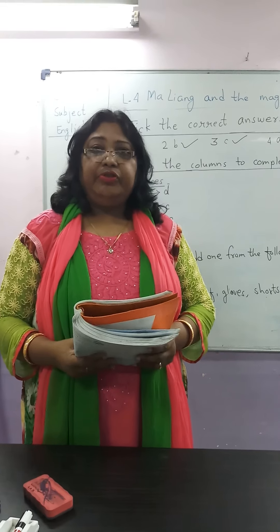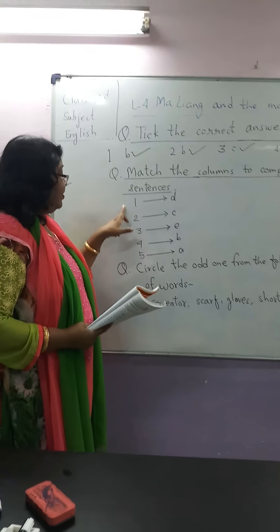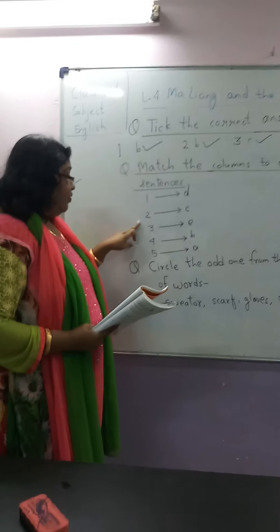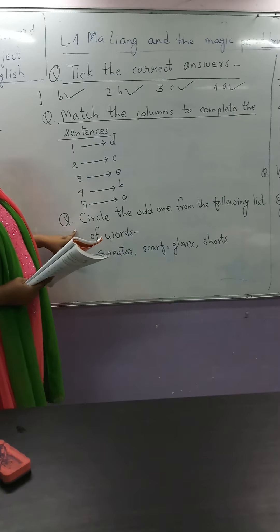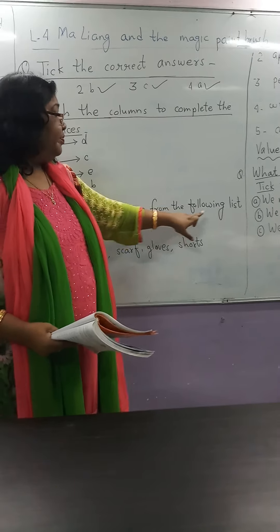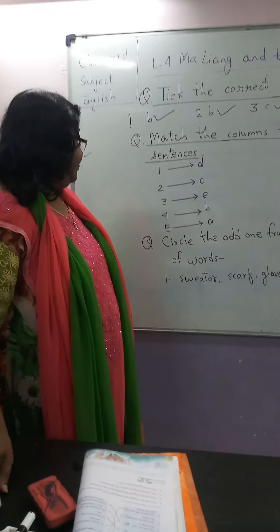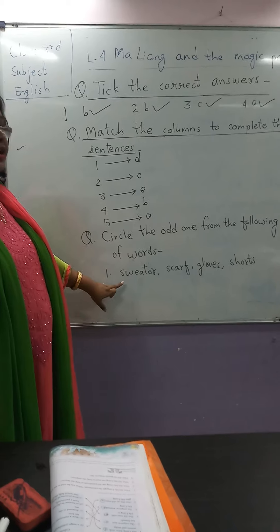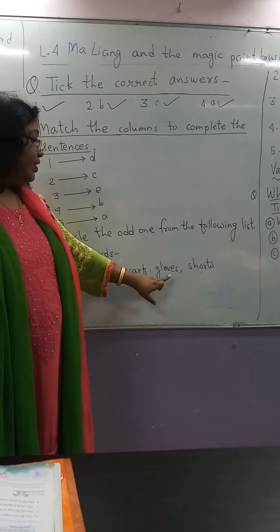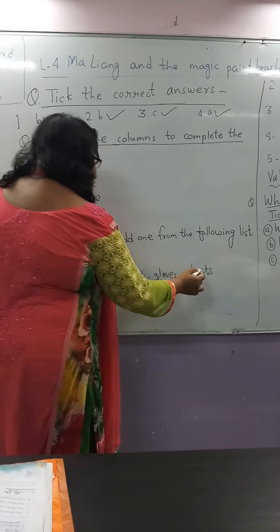Children, you have to draw all these correct options with these numbers of sentences. Now let us solve the third question — circle the odd one from the following list. We have a group of words. Number 1: sweater, scarf, gloves, shorts. And the odd one is shorts.